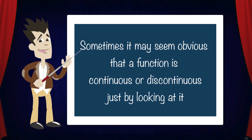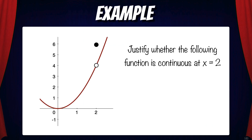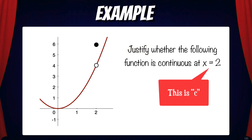Sometimes it may seem obvious that a function is continuous or discontinuous just by looking at it, but still we have to use all three conditions to prove continuity. Let's do an example: justify whether the following function is continuous at x equals 2. Justify means that we have to prove this using the conditions of continuity. Note that c in our problem is 2.